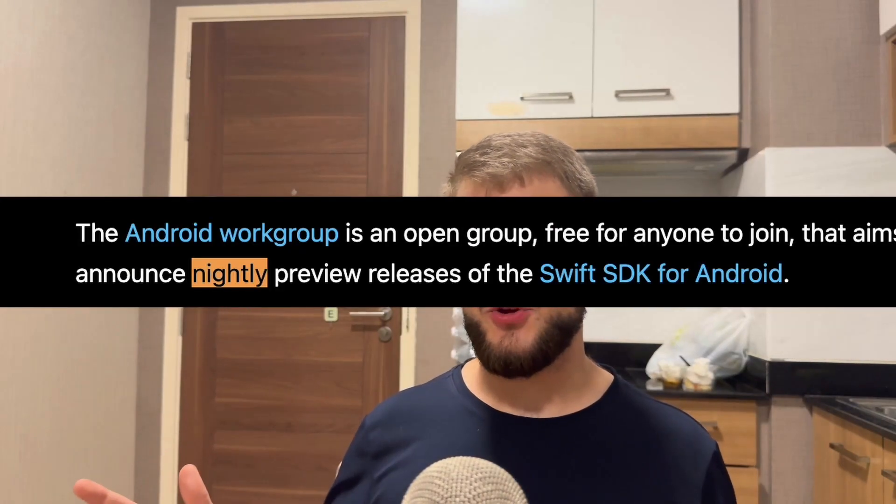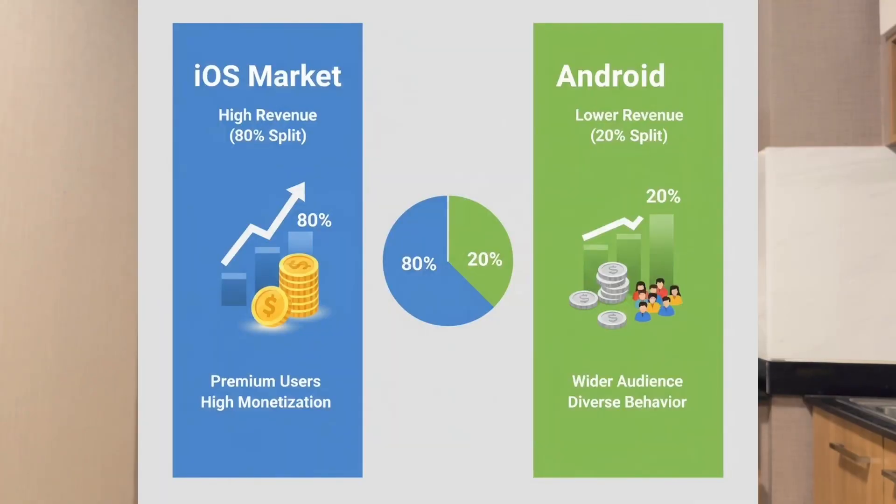This is currently a nightly preview — it's not production ready. You can expect bugs, breaking changes, and incompatibilities. API coverage is pretty limited; you're not getting access to every Android API through Swift. Android APIs are vast and constantly changing, and Swift will obviously lag behind. Also, since Android and iOS have different markets, you might still need to adjust some of your logic, because different markets react differently to things on the business logic side.